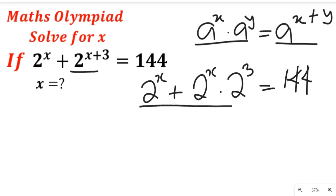Now consider these equations as a whole. We'll find out that 2 to the power of x is common, so we'll bring it out. In this expression, this will become 1 plus 2 to the power of 3, and this will be equal to 144.